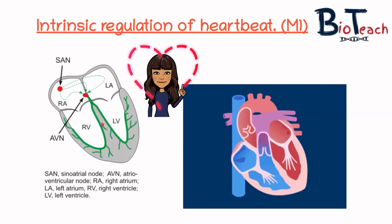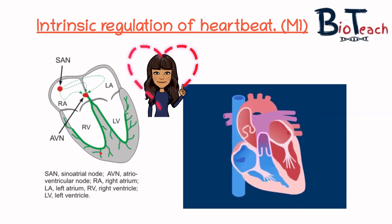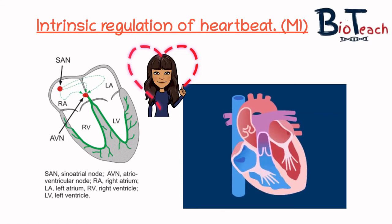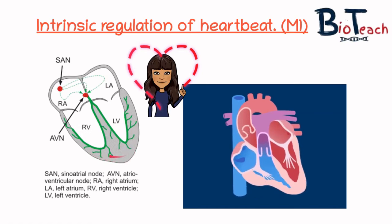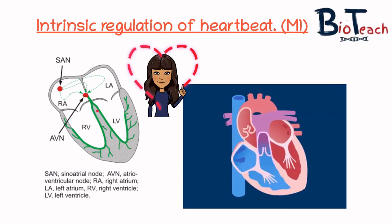The electrical impulse travels down the septum along the bundle of His and eventually reaches the bottom of the ventricles, where it transfers onto what we call Purkinje fibres — sometimes spelled Purkinje. These impulses initiate contraction from the bottom of the heart through the apex, forcing blood from the right ventricle into the pulmonary blood vessel and from the left ventricle into the aorta.